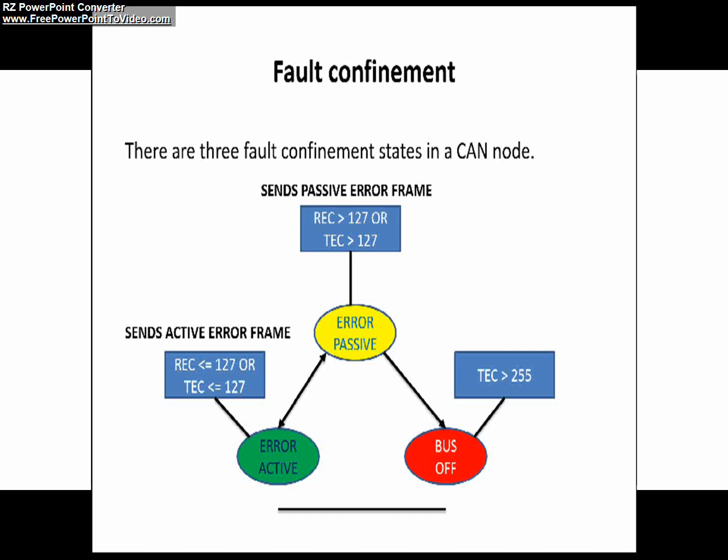You may ask why not the receive error counter for Bus Off. We are going to discuss that in upcoming videos when we discuss the rules for transmit error counter and receive error counter incrementing and decrementing. We will discuss the reason behind and the exceptions for considering only TEC for Bus Off state. In Bus Off state, the node is not able to transmit and receive any messages in the CAN network. This can be recovered after re-initialization.